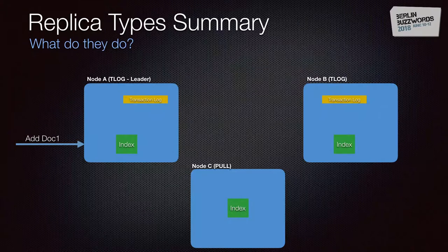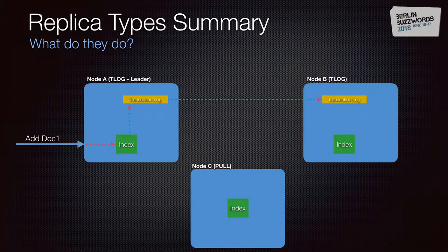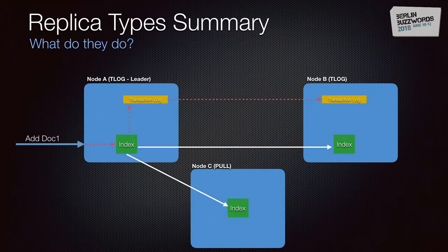To show the data flow with two TLOG replicas and a pull replica: when an update is received, it goes to the index and transaction log of node A (a TLOG replica that is leader, so it's indexing). It also goes to the transaction log of all other TLOG replicas, and then the index is replicated to all TLOG or pull replicas periodically.